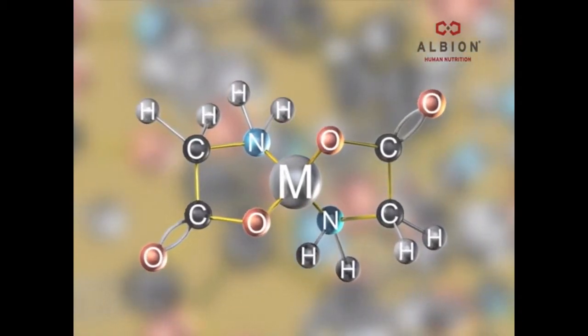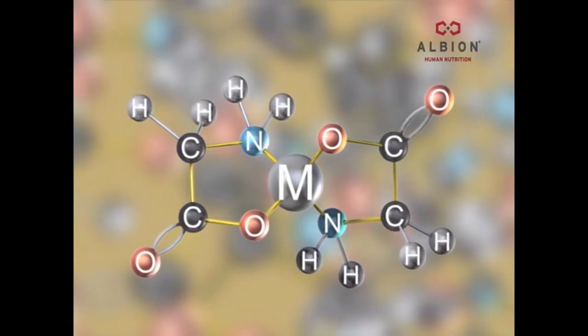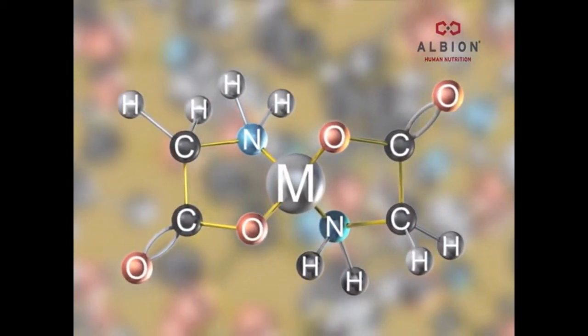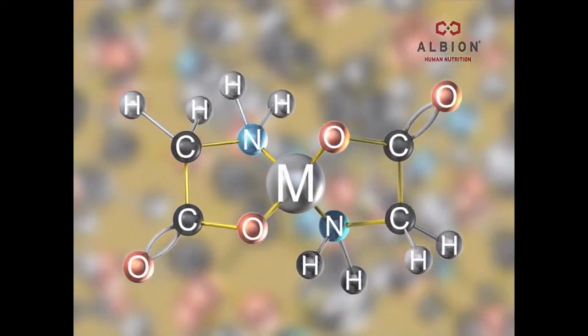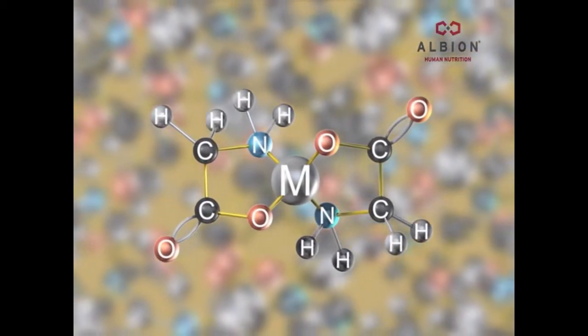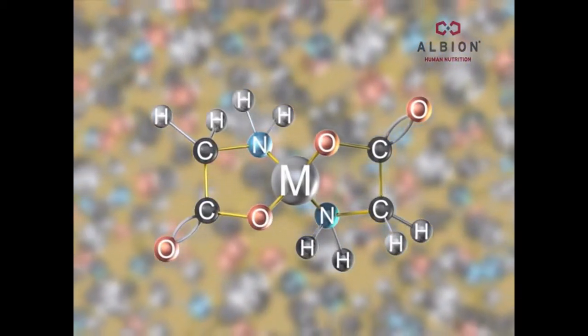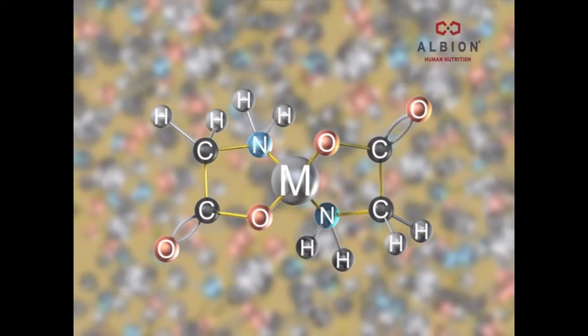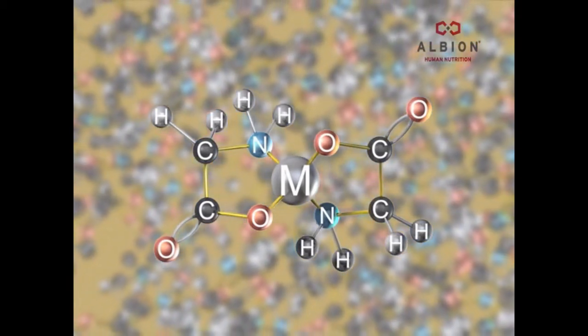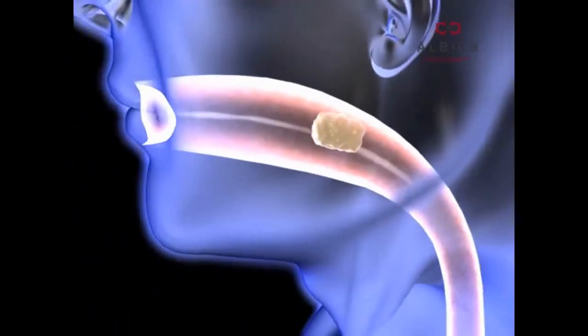These organic mineral chelates have a special molecule formation. The two glycine amino acids form a characteristic ring with each ligand, attaching and protecting the mineral in two places. This structure is sufficiently strong to stay together through the digestive process, but also sufficiently weak so the mineral can be freed in the right place in the jejunum.